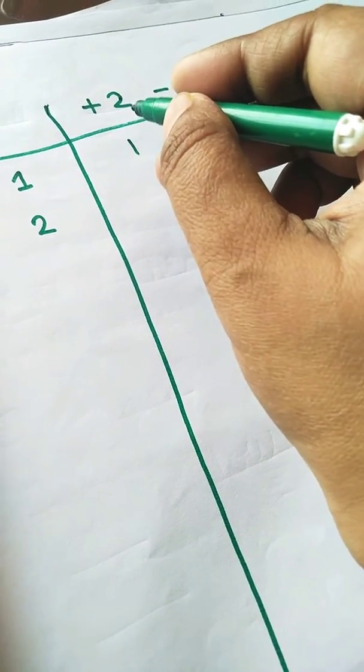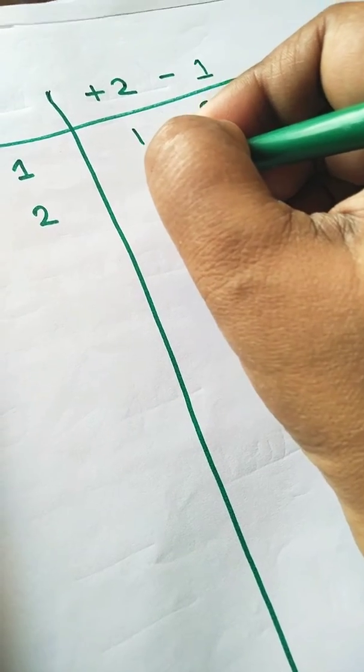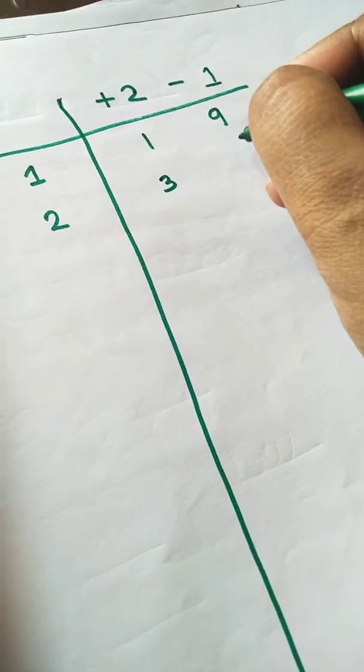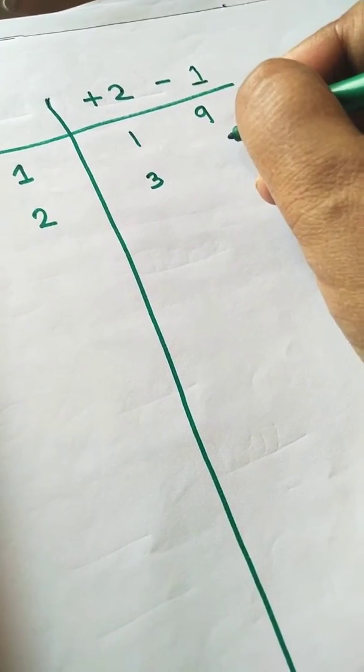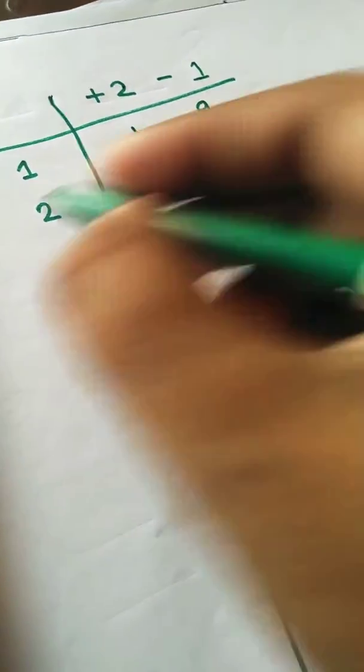2. When we add 2, we get 3. And if we subtract 1, we get 8. So 19 twos are 38.